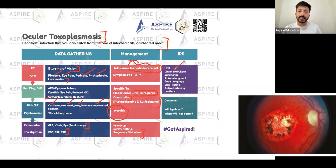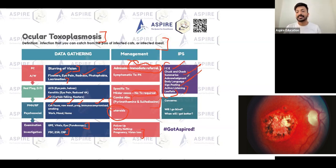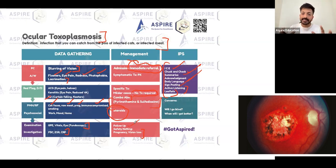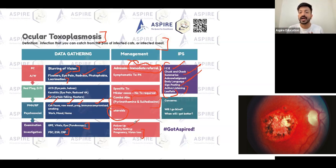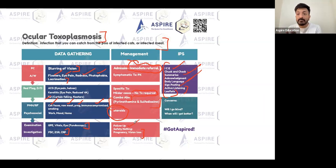Use the ICE framework — the patient might be concerned about going blind. Summarize, acknowledge, use good body language, signposting, active listening, and provide leaflets. Always mention follow-up. This station can come with a mannequin, so be quick with your history. Mild cases need no treatment; major cases may need a combination of antibiotics. Don't miss the risk factors and bring them into your management — the examiner will be impressed.